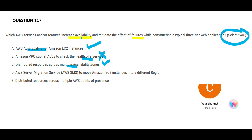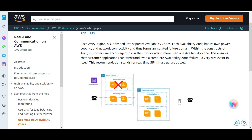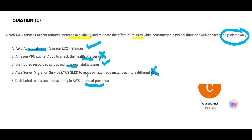Therefore C is the right answer — with multi-AZ, the availability of your application increases and you are more resilient to failures beforehand. The problem with option D is: before going for a multi-region deployment, I would first do a multi-AZ deployment, which is option C. C is more correct than D. In this diagram, I have one region with two AZs — I would first exhaust this option before adding another region with multiple AZs. I would not go to Region 2 unless I have exhausted Region 1 and all its AZs.